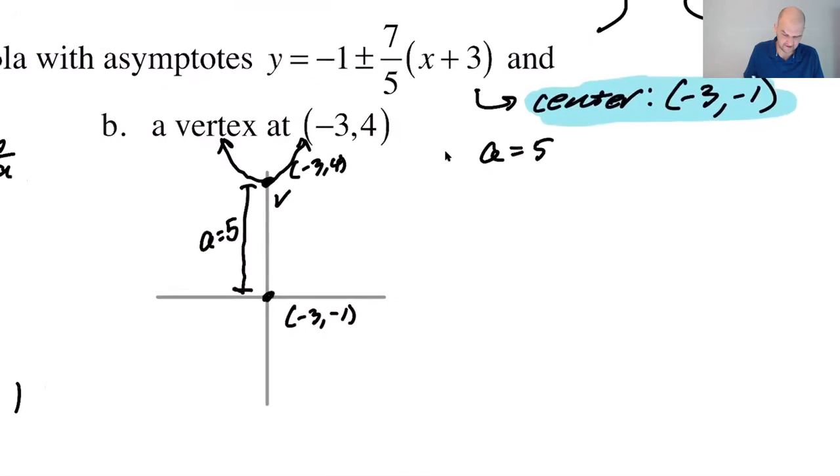And then, that means that our asymptotes, right? So B is going in this direction. So our asymptote, the slope is going to be a/b. So a/b is going to be 7/5. So 5/b is 7/5. So b, I think it's 25/7.